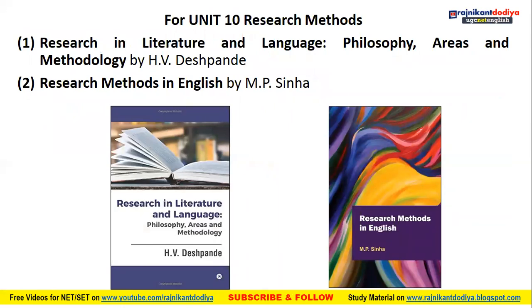For Unit 10 — Research Methods in Literature and Language — the first book is Research in Literature and Language: Philosophy, Areas and Methodology by H.V. Deshpande, which is a very good book. A PDF copy with some sample pages is available. The second book is Research Methods in English by M.P. Sinha, also a good book. Any one of these two copies will be sufficient for preparation for Unit 10.